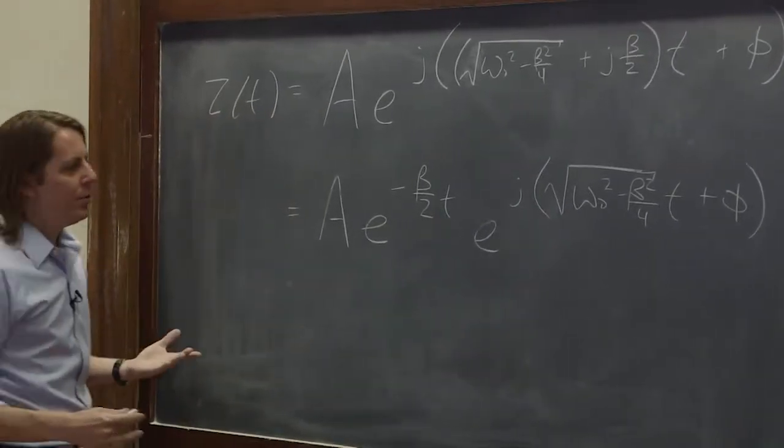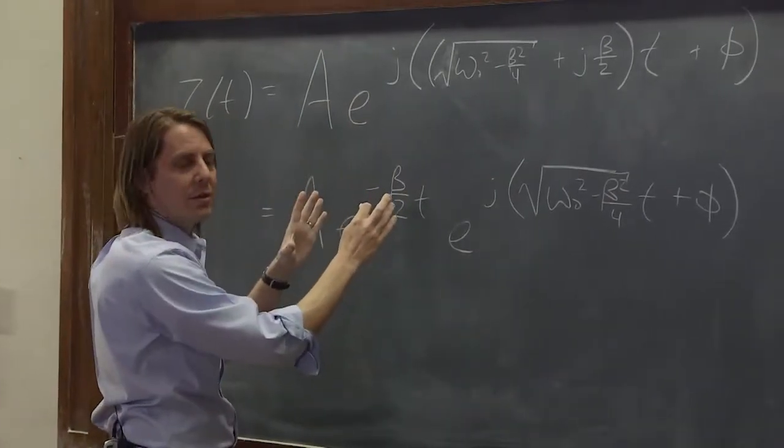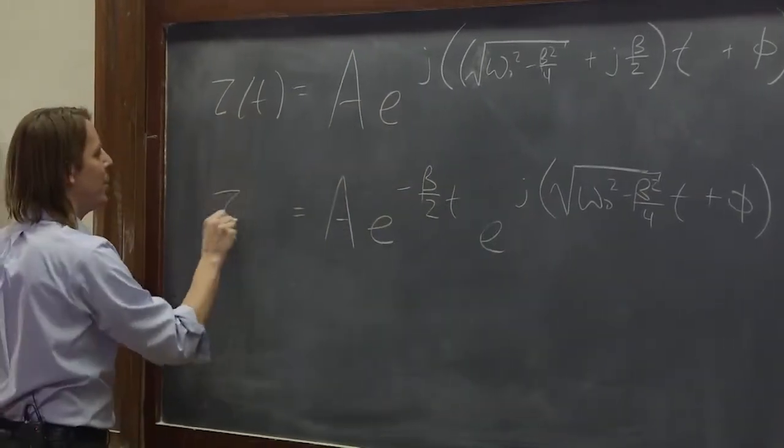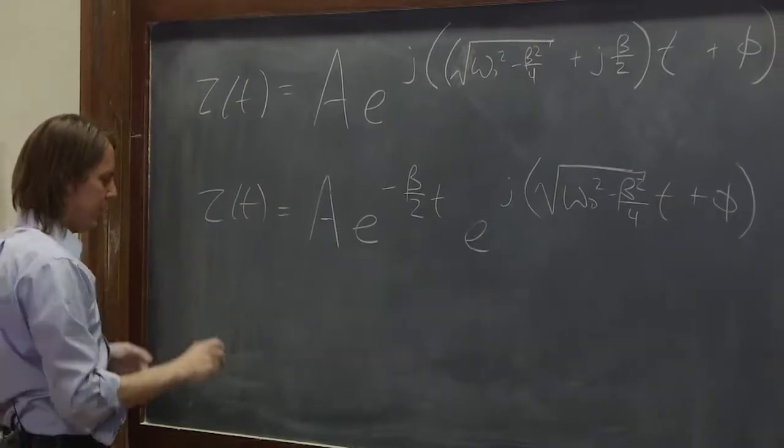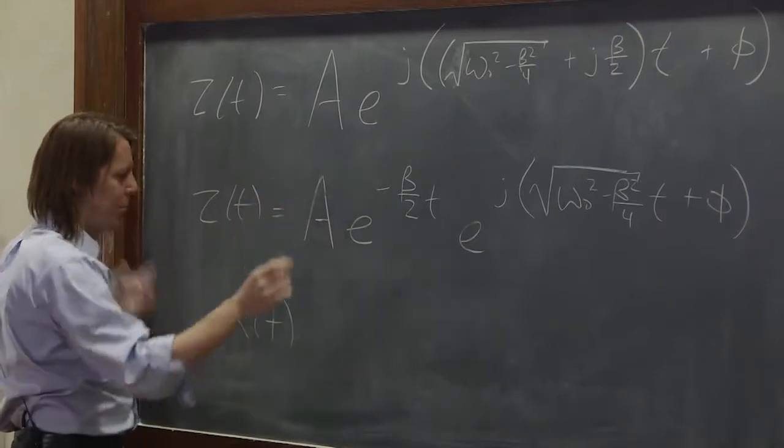So you can see what it looks like is something that oscillates, but that also goes through exponential decay. We can even go all the way. Remember, we've got to work in the real world. We have to work in reality. We can't work with complex numbers. For our real answer, we need X of T.